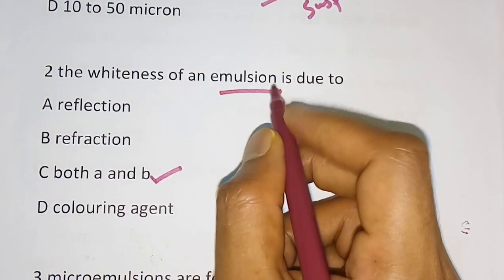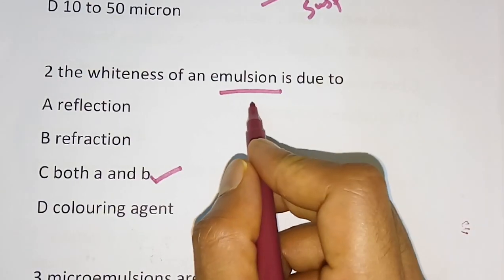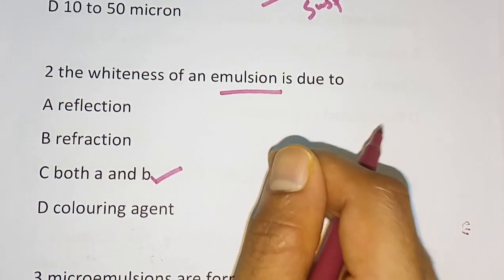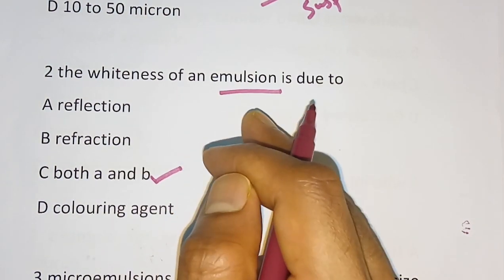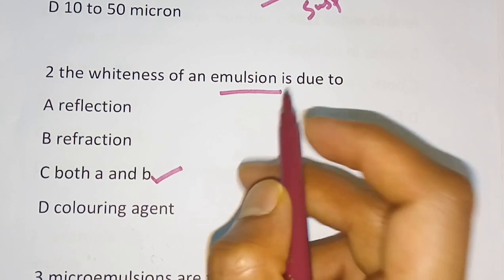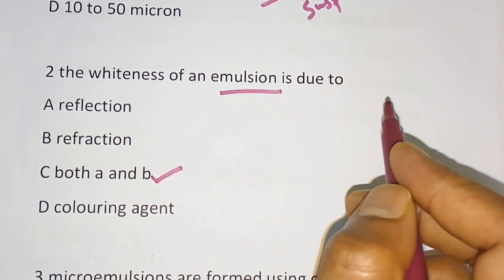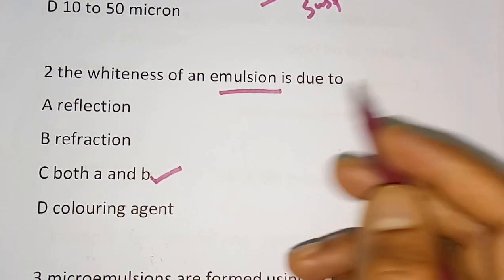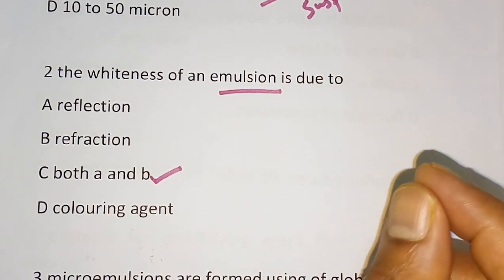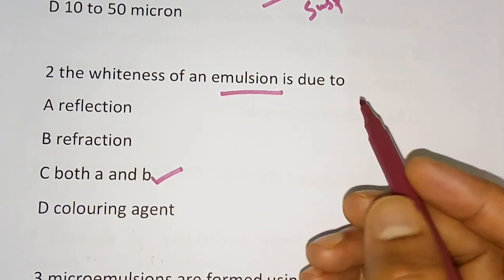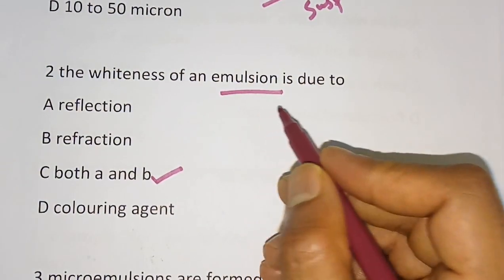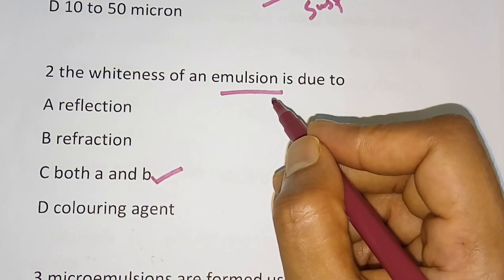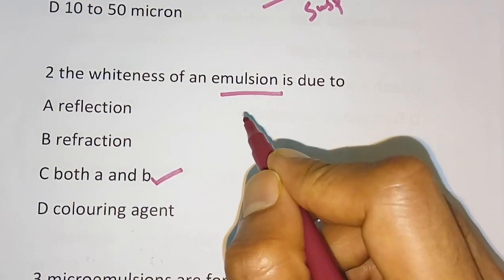Emulsion is a biphasic liquid preparation — two phases are present. Unlike suspension where one phase is solid and one is liquid, in emulsion both phases are liquid dosage forms. They are immiscible liquids, one of which is dispersed as minute globules in the other. That is the definition of emulsion.